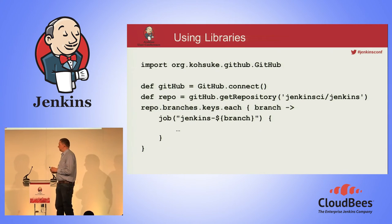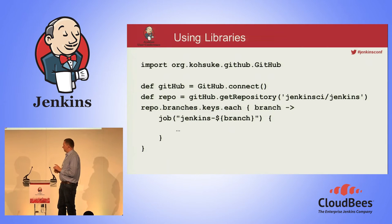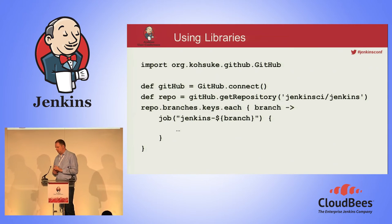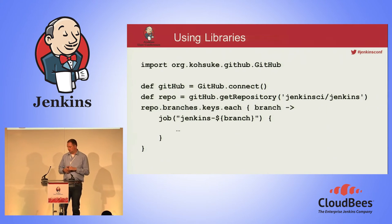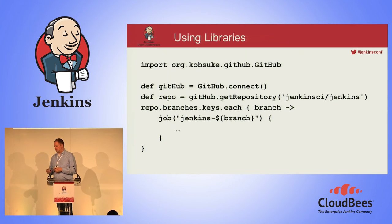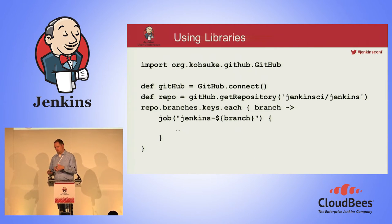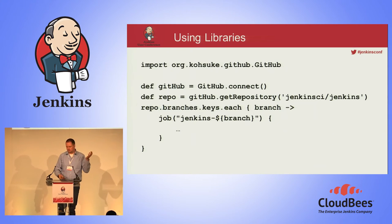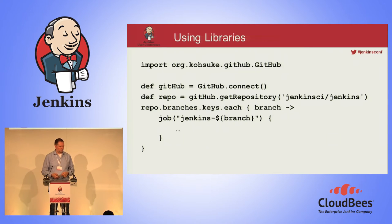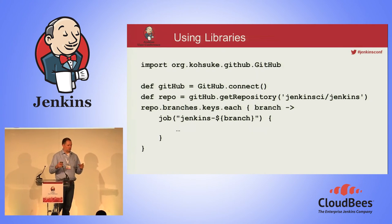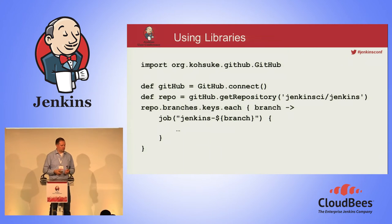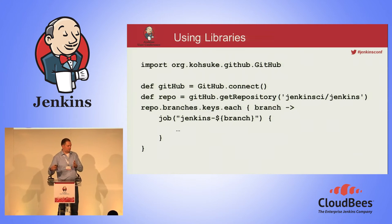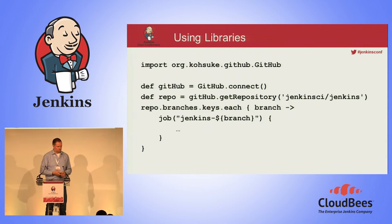So how would a DSL script look that uses a library? In this case we're using the GitHub library to connect to GitHub, get our repo data, and create a job for each branch in the repo. It goes to GitHub, gets the Jenkins repo where Jenkins core is being developed, and loops over each branch and creates a job for each one. This will end up with maybe 15 branches, so you'll have 15 jobs. When you set your seed job to run every 10 or 15 minutes, and someone pushes a new branch to GitHub, you'll have a new Jenkins job building that branch after 15 minutes.